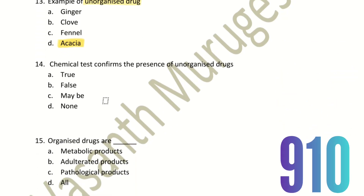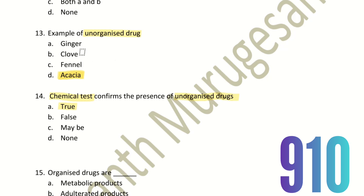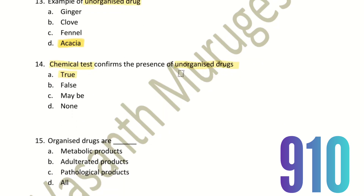Fourteenth question: Chemical test confirms the presence of Unorganized Drugs — true or false? The chemical test is one method to detect Unorganized Drugs. The right answer is true.